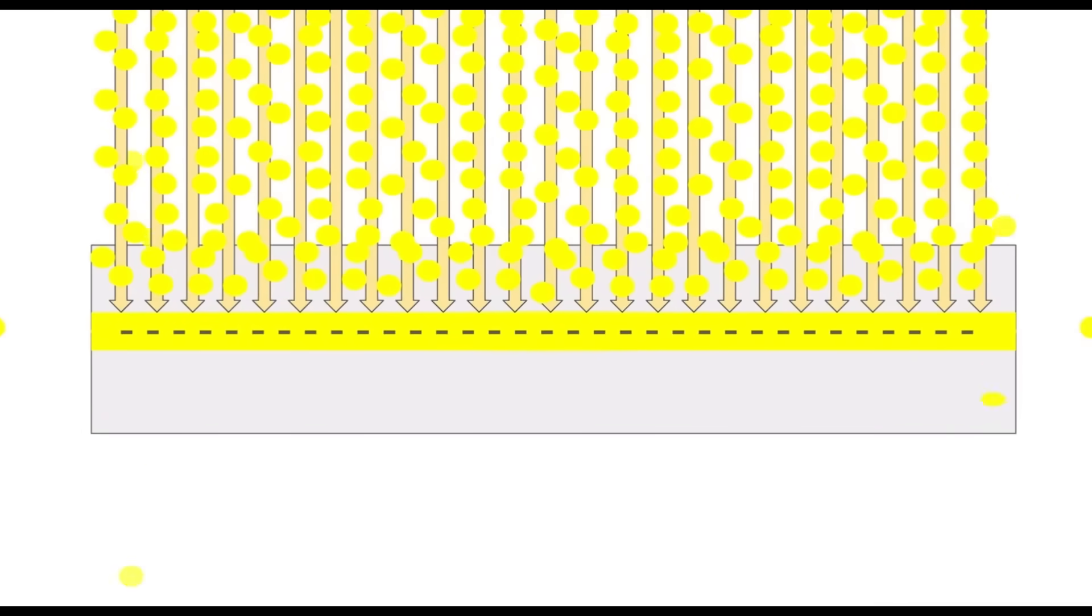You may be wondering why the edges of the space charge are rounded. The general consensus for this is that within the linear accelerator during irradiation, electrons along the edges can actually bleed out, as we can see here in this animation. This results in an uneven accumulation of charge and thus a space charge that's not perfectly rectangular.